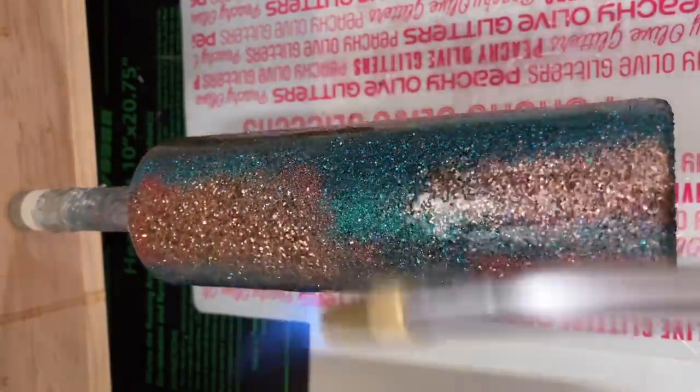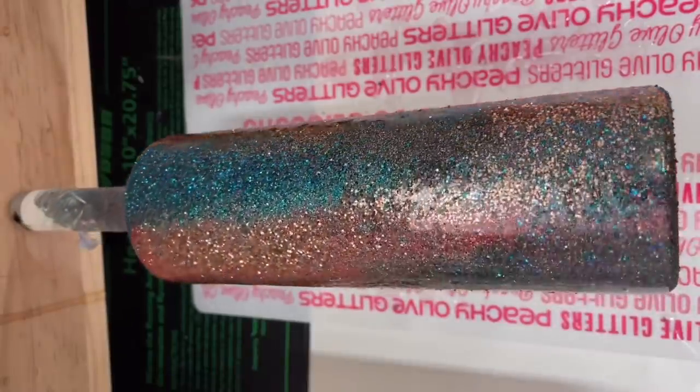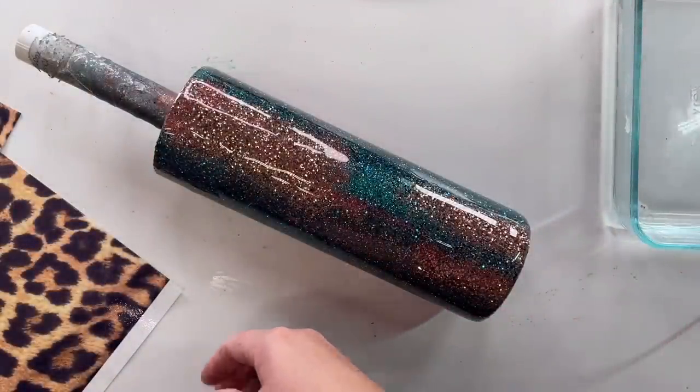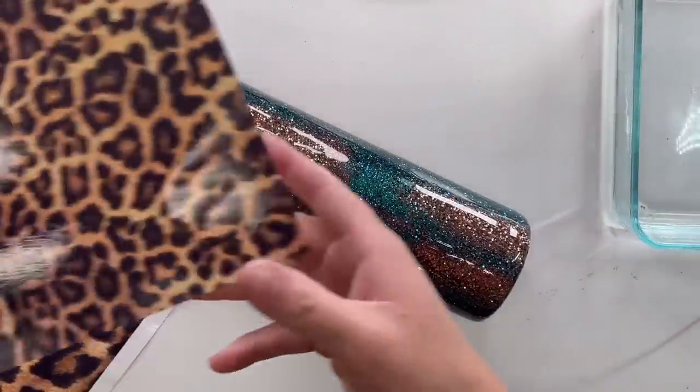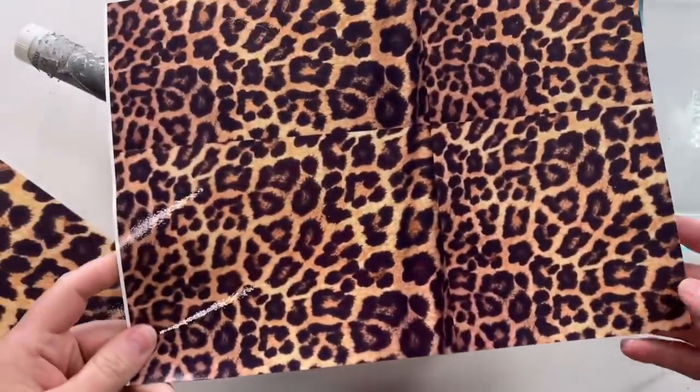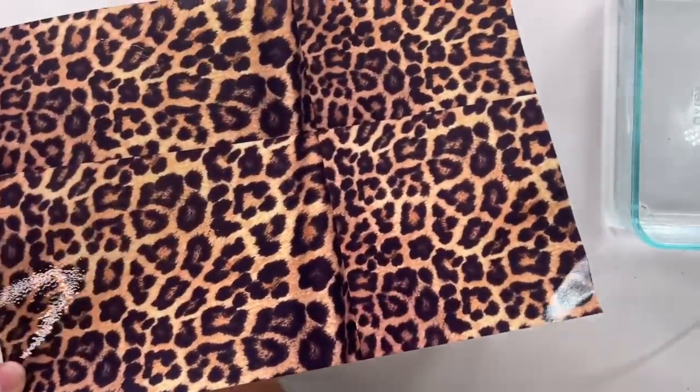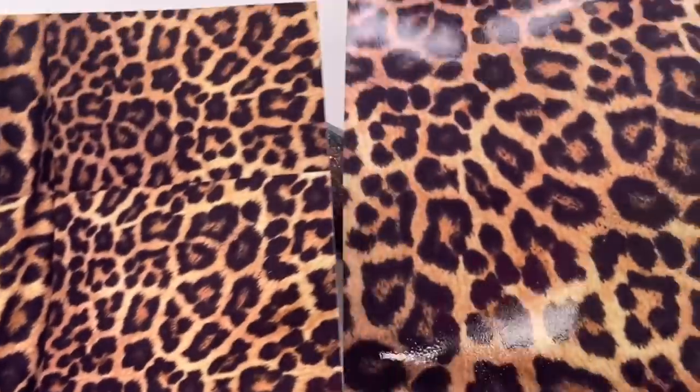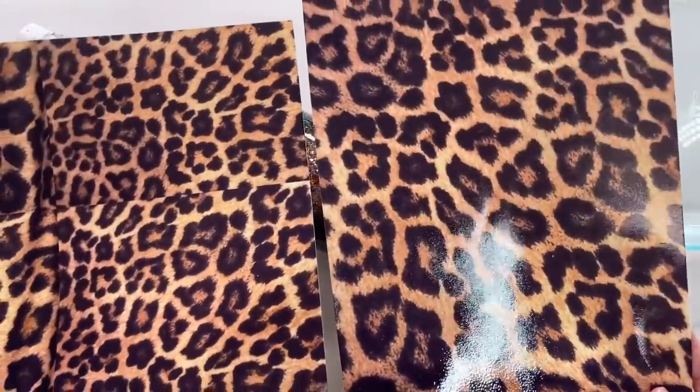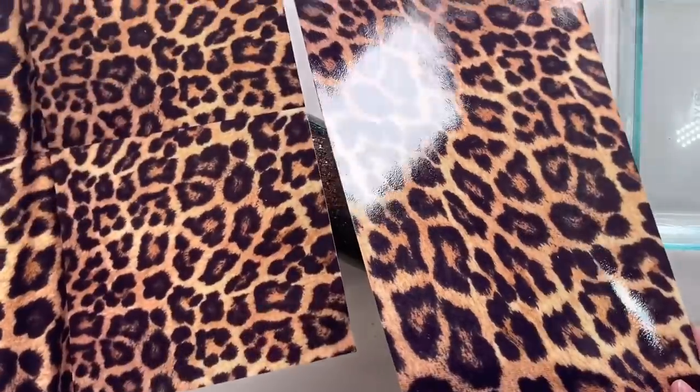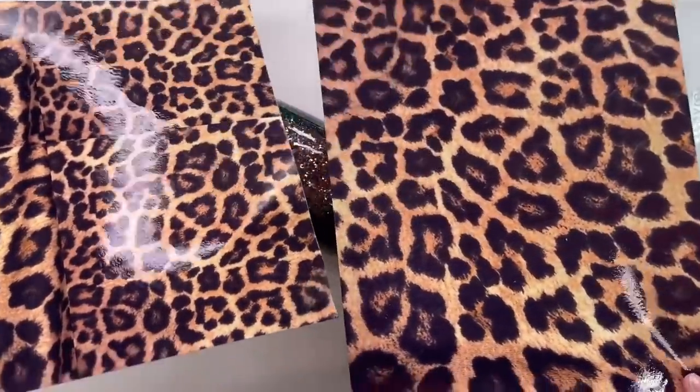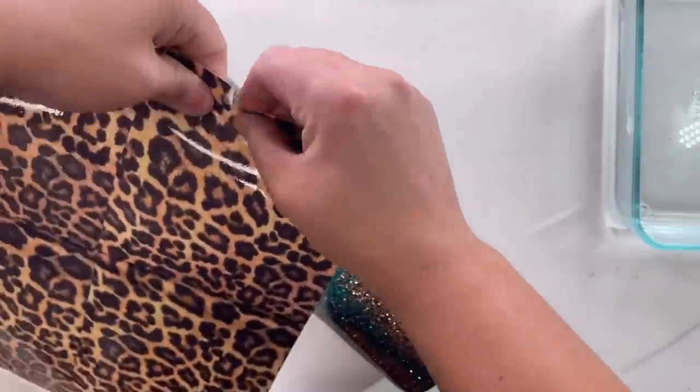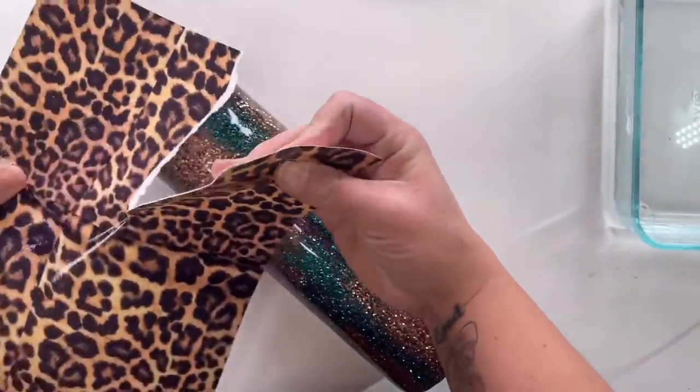And so now my cup has two layers of epoxy on it, and it's mostly smooth, so I'm ready to apply my water slide. I've got two sheets of leopard print here that I've already printed and sealed five times with nice, light coats of Rust-Oleum 2x Gloss Clear Spray Paint. If you need help with how to print full sheet water slide, I will link a tutorial down below that I think you'll find helpful.